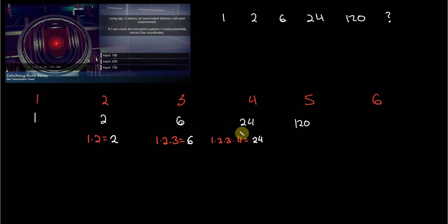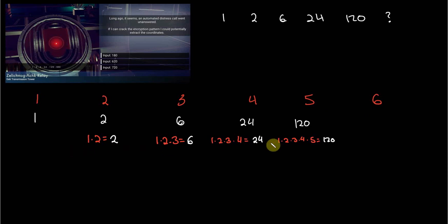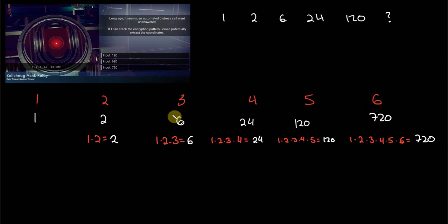And at this point, if someone got so far as to figure all of this out, the fifth term would have become obvious. They would have said: it's 1 times 2 times 3 times 4 times 5, which does indeed equal 120. And then to find the sixth term would have been fairly straightforward — you would just continue with the same logic: 1 times 2 times 3 times 4 times 5 times 6 equals 720. So 720 is the missing value, the sixth term.